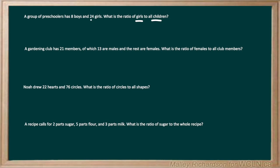The number of girls is given to us as 24, and then all of our children is going to be our boys plus our girls. So we're going to have the number of boys plus the number of girls: 8 plus 24 gives us 32, so 32 is going to be our total number of all children, which is our whole. To write our part-to-whole ratio, we're going to have our part — the number of girls — on top, and our whole in the denominator, which is 32.